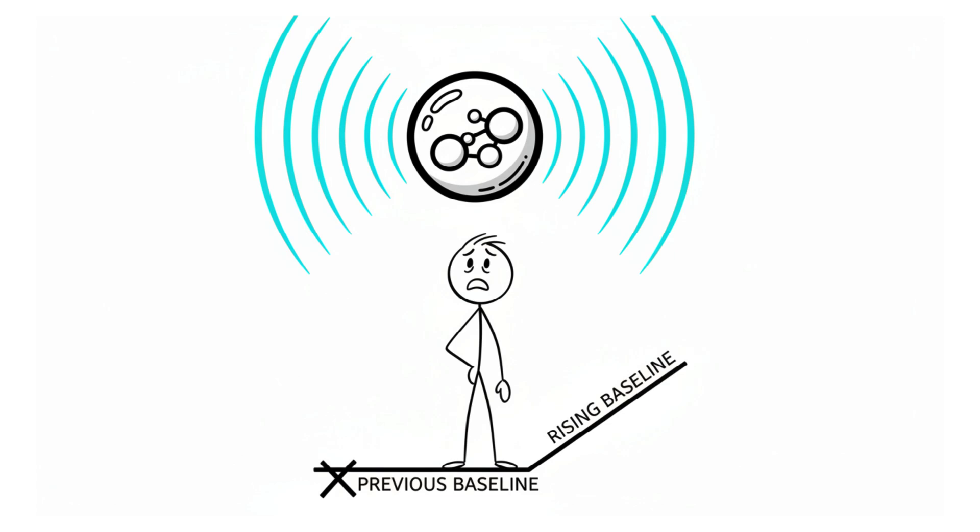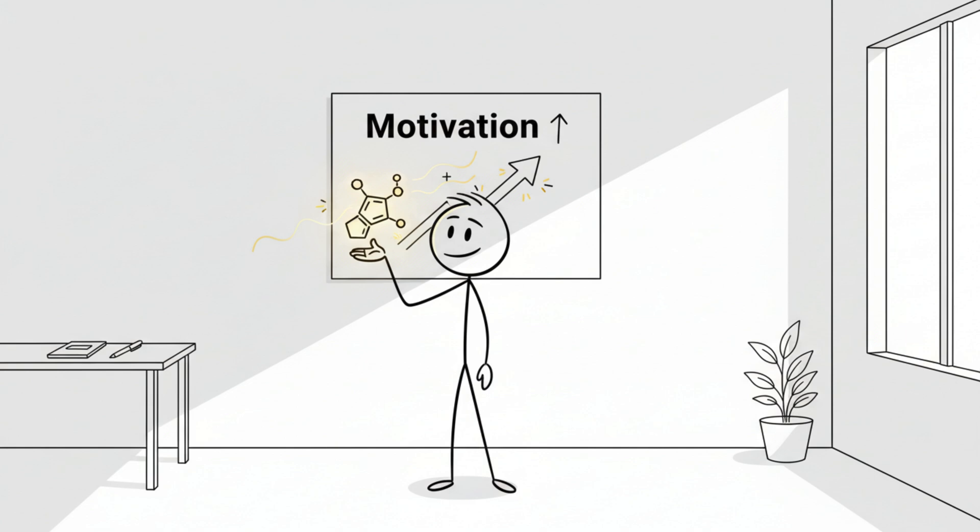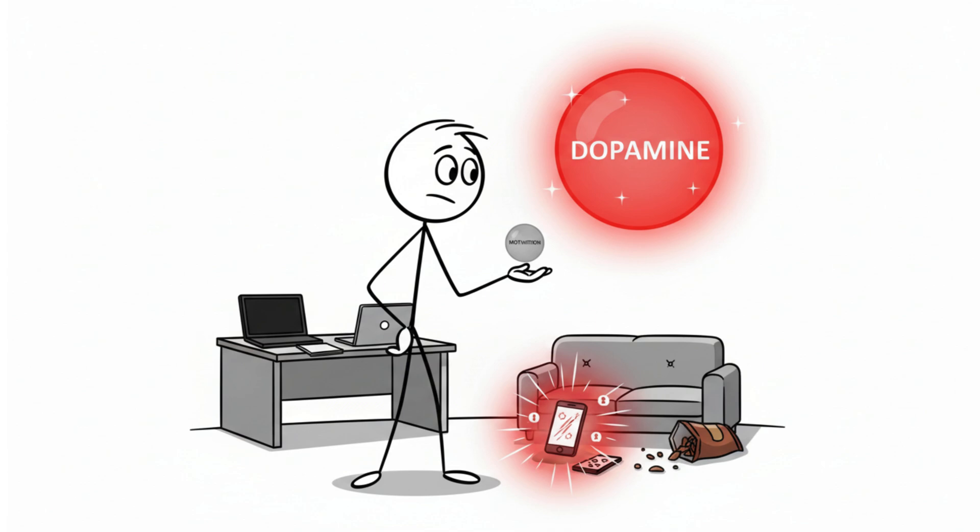Your brain has now got a new baseline for dopamine. Remember, dopamine is the chemical that causes motivation. So now your brain will only be motivated to do things that release as much dopamine as scrolling, gaming, or eating junk food.